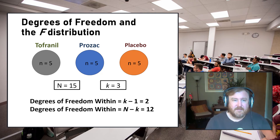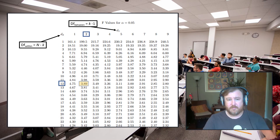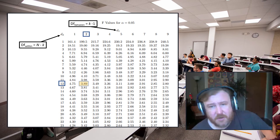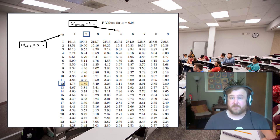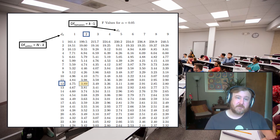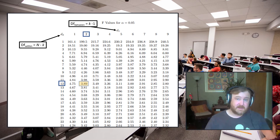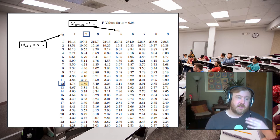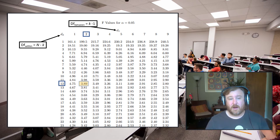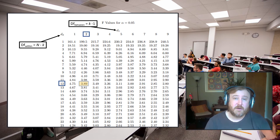For our test with degrees of freedom 2 and 12, we look up the F distribution table. The numerator degrees of freedom (between-subjects variance) goes along the top row — we had 2. The denominator degrees of freedom (N minus k) goes down the side — we had 12. Looking up 2 and 12, they intersect at 3.89, which is our critical value of F for this test.